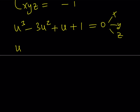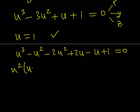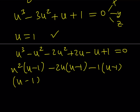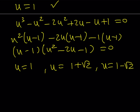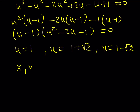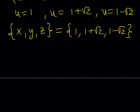So I can factor it: (u minus 1)(u squared minus 2u minus 1) equals 0. This gives u equals 1, u equals 1 plus root 2, and u equals 1 minus root 2. Those are going to be the x, y, z values. Writing it as a set avoids listing all ordered triples. So the x, y, z values are {1, 1 plus root 2, 1 minus root 2}, and that gives us all the real solutions.